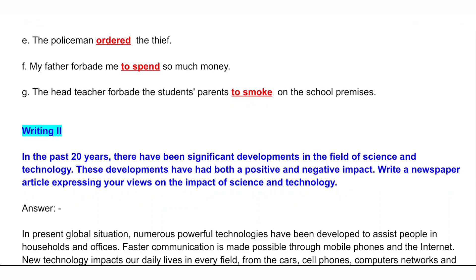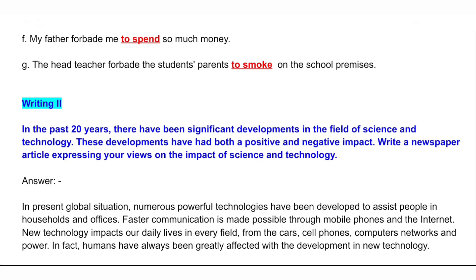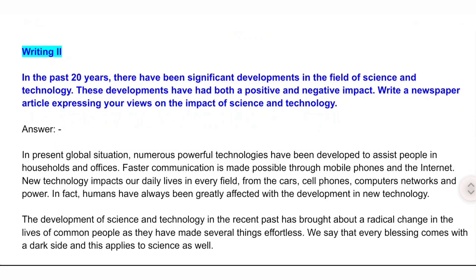Writing: In the past 20 years, there have been significant developments in the field of science and technology. These developments have had both a positive and negative impact. Write a newspaper article expressing your views on the impact of science and technology. Answer: In the present global situation, numerous powerful technologies have been developed to assist people in households and offices. Faster communication is made possible through mobile phones and the internet. New technology impacts our daily lives in every field — from cars, cell phones, computers, networks and power.